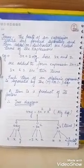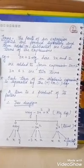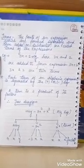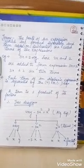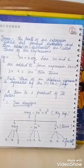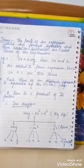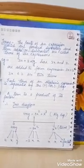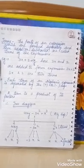A term is a product of its factors. Here I am showing you a tree diagram which explains the relationship between expression, terms, and factors. Take 4xy − 3x² + x³ as an algebraic expression. It divides into three terms: first 4xy, second −3x², and third x³. Further, 4xy divides into factors 4, x, and y; −3x² divides into −3, x, x; and x³ divides into three factors x, x, and x.